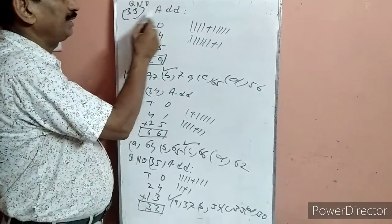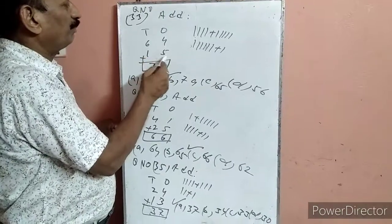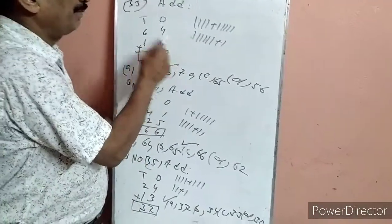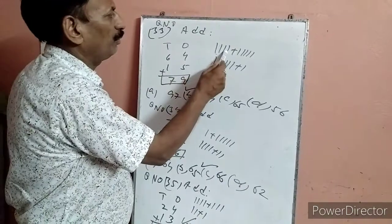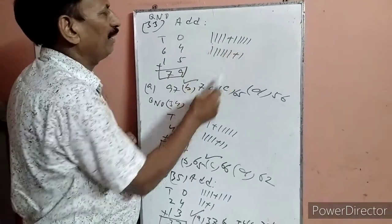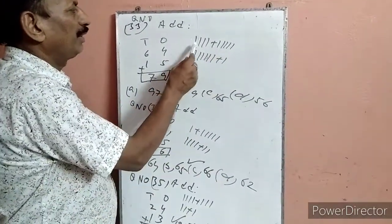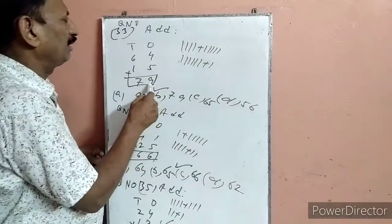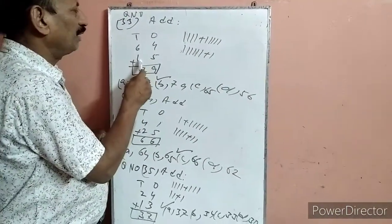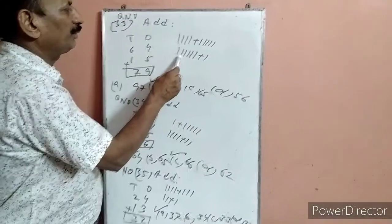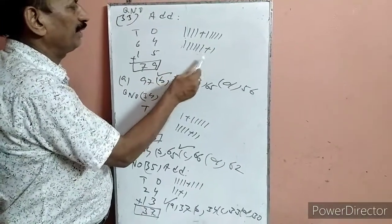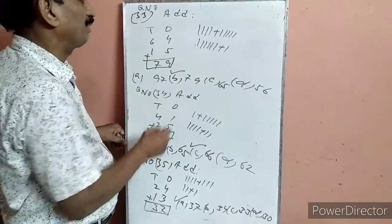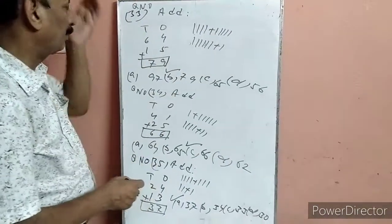Question 33: Add — 64 plus 15. Units: 4 में 5 add करेंगे: 1, 2, 3, 4, 5, 6, 7, 8, 9. हमने 9 लिख दिया. Tens: 6 में 1 add करेंगे: 1, 2, 3, 4, 5, 6, 7. Answer 79. B पर है, इसलिए B option सही है.